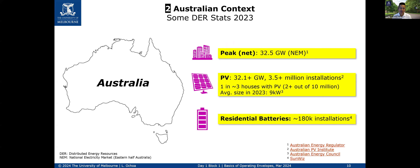In terms of photovoltaics, there are more than 32 GW worth of installations — millions of installations — which means it's not really about solar PV farms, it's about many small-scale residential installations. Almost one in three houses in Australia has photovoltaics, more than 2 million out of 10 million installations. The average system size in 2023 has increased to around 9 kilowatts. In terms of residential batteries, there are more than 180,000 batteries as well.